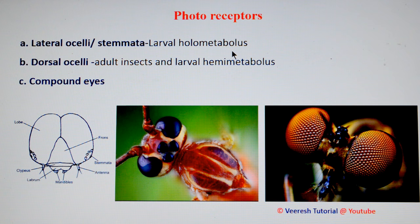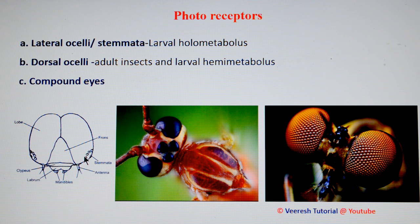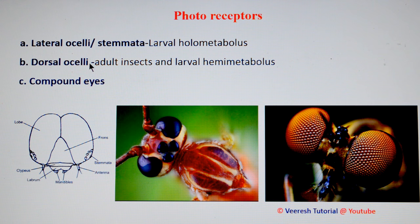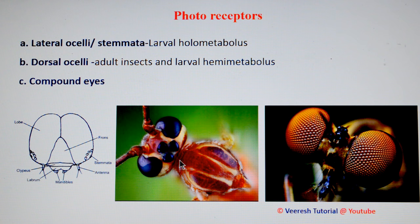Photoreceptors include several types of eyes. Larval holometabolous insects have one or more single-lens eyes located on either side of the head, which allow detection of form, color, and movement — these are called lateral ocelli or stemmata. Dorsal ocelli are found in most adult insects and larval hemimetabolous insects; they help in perception of light to maintain the diurnal rhythm but are not involved in image formation, varying from 0 to 3 in number.